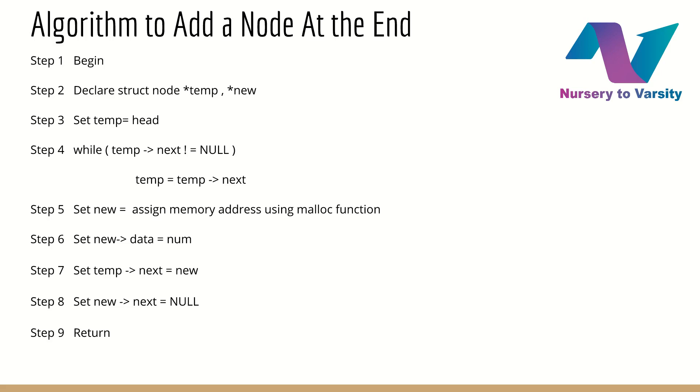Step 1 is, begin the algorithm. Step 2 is, declare two variables, temp and new of struct node type. Step 3 is, temp equal to head, means temp is going to start from first node and will go till the end. Step 4 is, to insert the new node at the end, this while loop will be used, while temp arrow next not equal to null means, keep on increment till the point where temp arrow next will not become equal to null. In this while loop, temp equal to temp arrow next means, we are moving forward one by one to the next node.